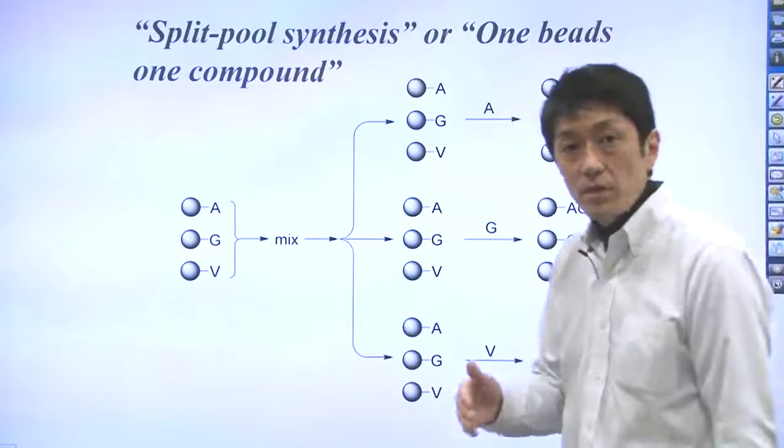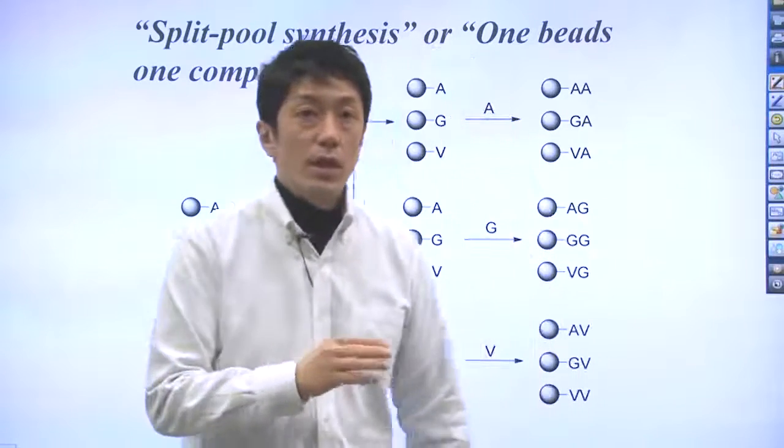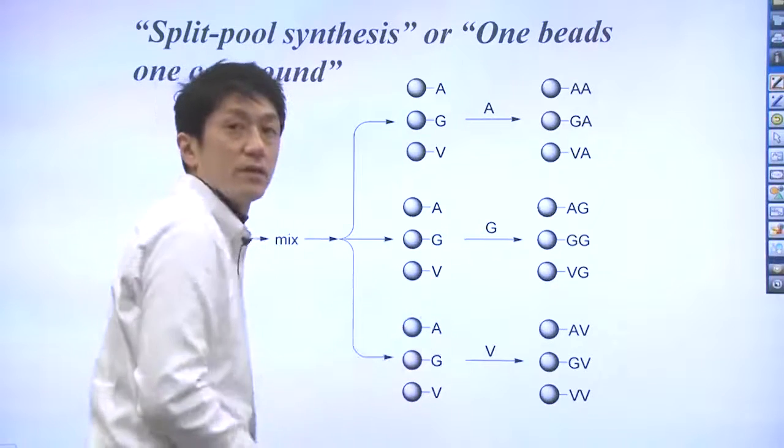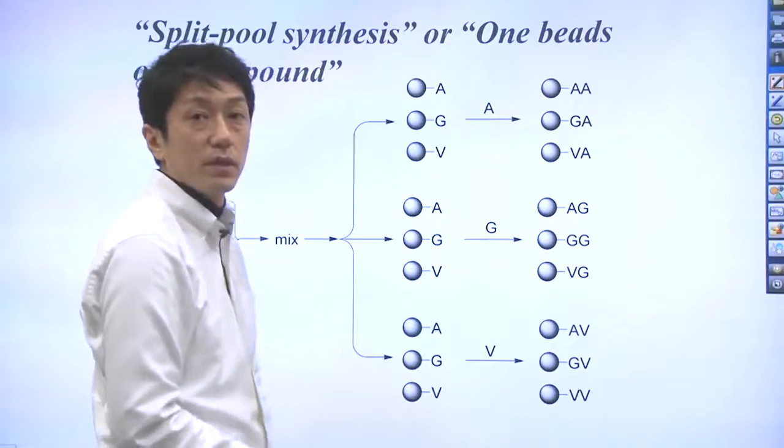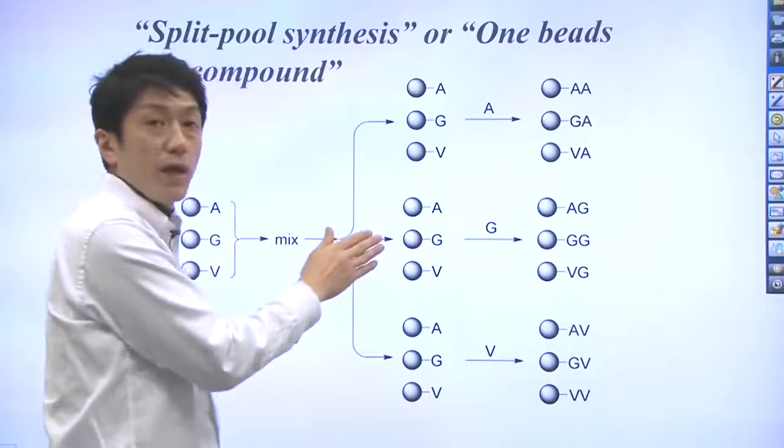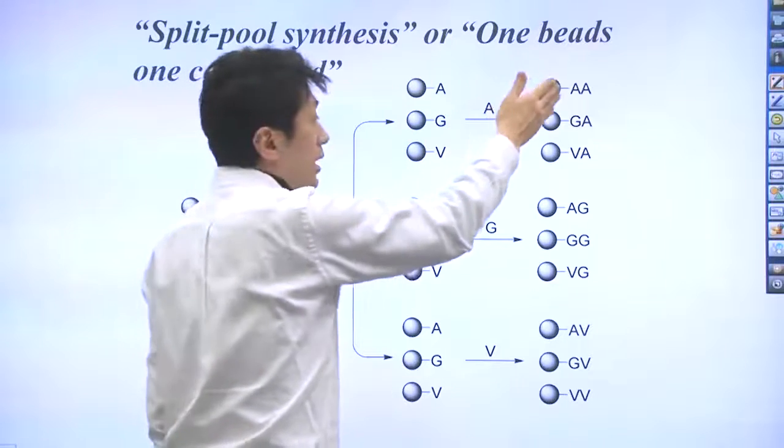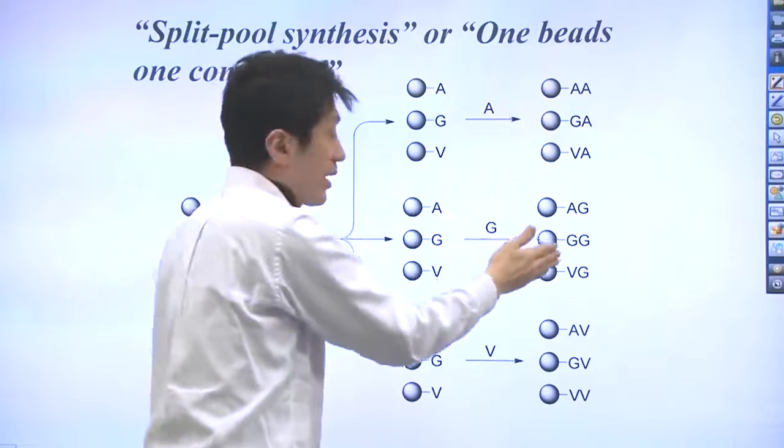Next, the beads in the three tubes are allowed to react with amino acids A, G, V respectively. Then, you will have created nine different peptides.